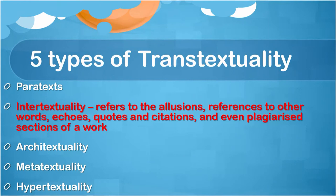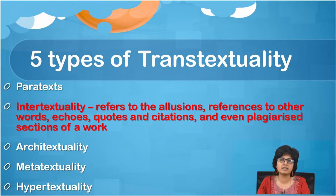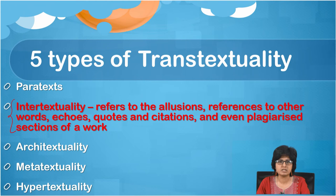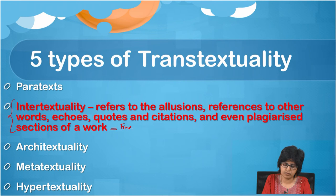Genette also spoke about five types of transtextuality — a term he used for this aspect — including paratext (also a 1977 work by Genette), intertextuality, architextuality, metatextuality, and hypertextuality. In intertextuality he refers to allusions, references to other works, echoes, quotes, citations, and even plagiarised sections of a work, in order to lead us to the final meaning or core of a text.